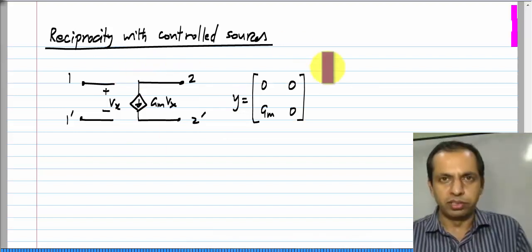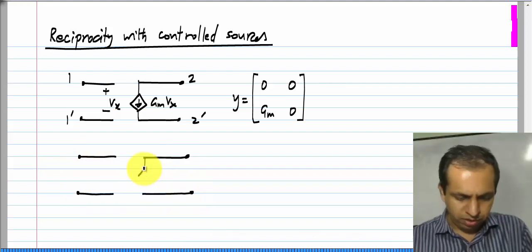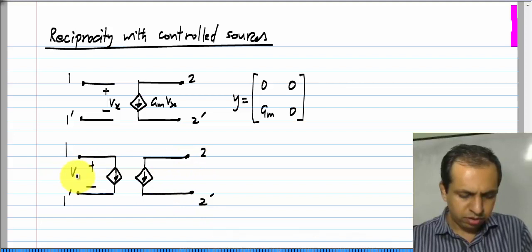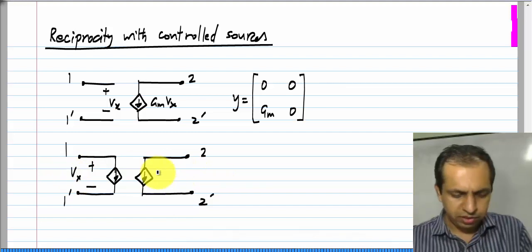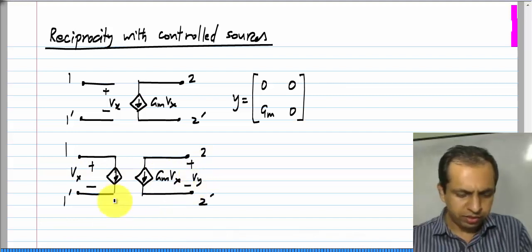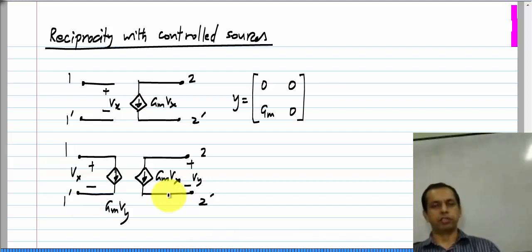This particular two-port is non-reciprocal, but let's say we take something else. For instance, we connect two controlled sources together. Let's say this is Vx and this is Gm*Vx, and if this is Vy that will be Gm*Vy. Now you can evaluate the Y parameters of this two-port.